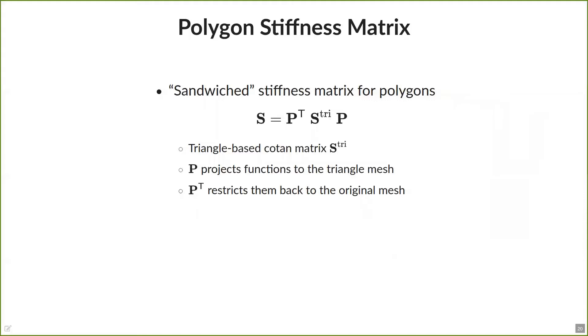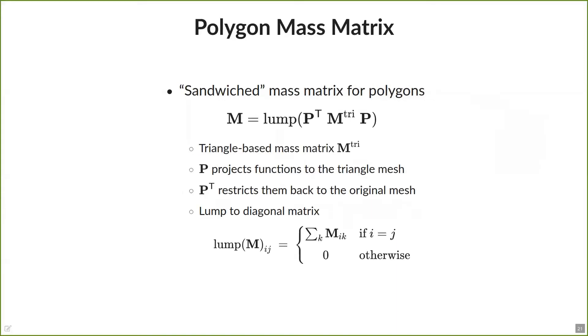With this, we are then able to define our new stiffness and mass matrix. By computing the stiffness matrix on the triangle mesh, we sandwich it with our prolongation and restriction operators, completely hiding the whole refinement step, and obtain a new matrix that lives on the coarse polygon mesh. We follow the same approach for the mass matrix with one minor additional step, because we observe that diagonalizing the matrix yields generally better results, so we lump the initial matrix to a diagonal one, which now roughly assigns each vertex one-third of the surrounding triangle areas.